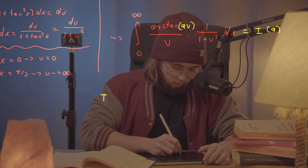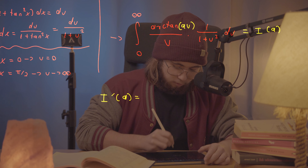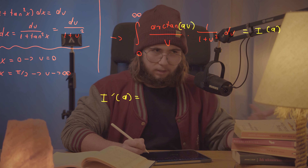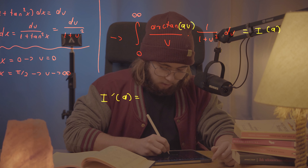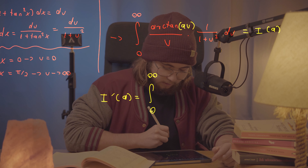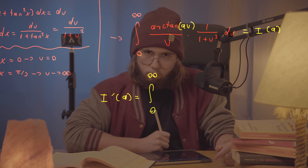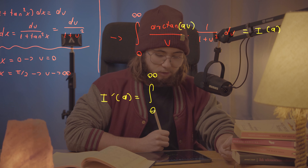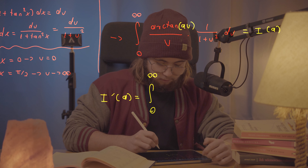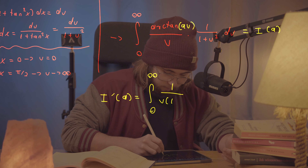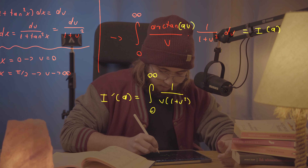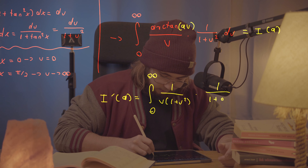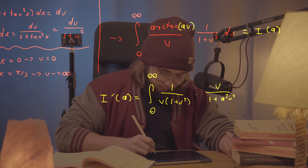I want to use the Feynman trick to get rid of the arctangent — it looks messy. I'll introduce a parameter a inside the arctangent, making it arctan(au). If I differentiate with respect to a, the arctangent disappears nicely. So I define I(a) as this entire integral and differentiate with respect to a.